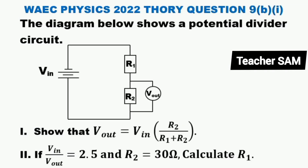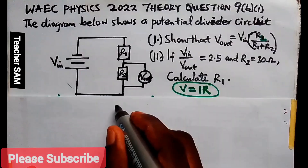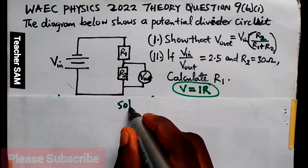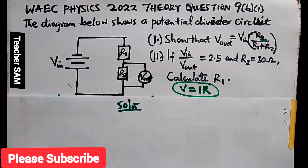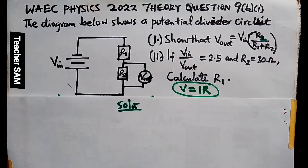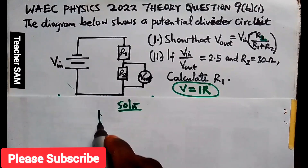Question 9b: the diagram below shows a potential divider circuit. Part I: show that V_out equals V_in multiplied by R2 all over R1 plus R2. Part II: if V_in divided by V_out equals 2.5 and R2 equals 30 ohms, calculate R1.